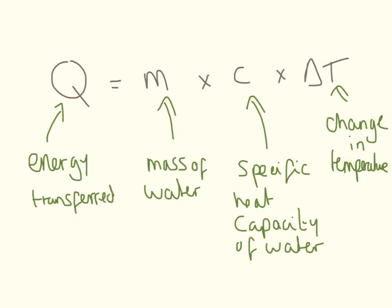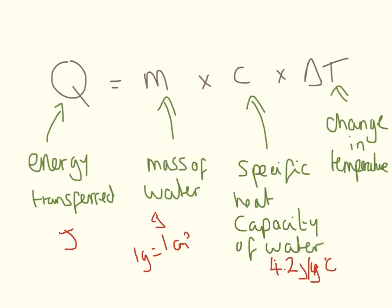Here is the equation we're going to be using — you'll probably recognize this from physics. The energy transferred is in joules. The mass of water is measured in grams, and one gram equals one centimetre cubed of water. The specific heat capacity of water is 4.2 joules per gram degrees. This symbol is delta, which stands for change in temperature, and temperature is measured in degrees C.